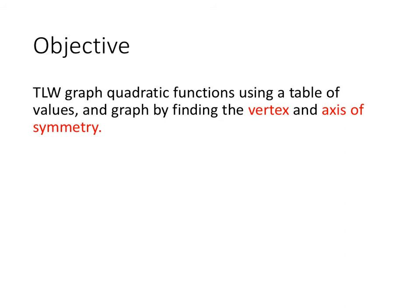Our objective today is to graph quadratic functions. We already did that using a table, but now we're going to graph by finding the vertex and the axis of symmetry. We're going to use those a little bit more to find characteristics of the graph and shape it more easily so we can go through this a bit quicker.